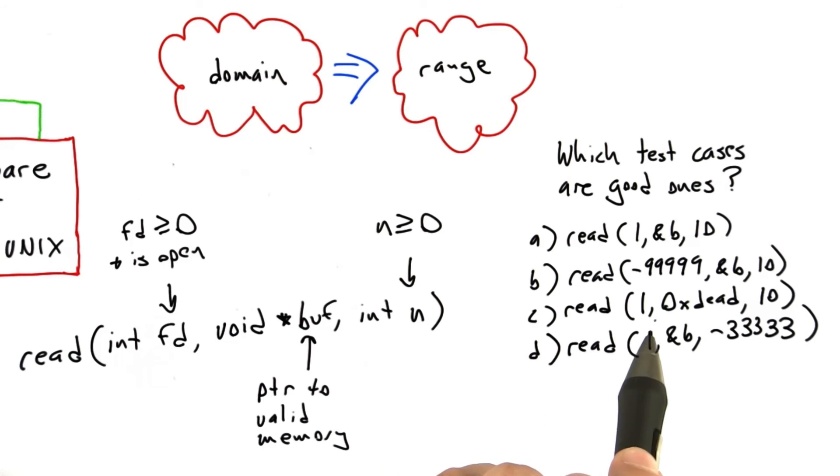The third test case is reading into file descriptor one, using a pointer to an address which is almost certainly a bad one. This is just a random hex constant I just made up. Also, reading 10 bytes into there. And a final test case reads into file descriptor one, into a valid address b, that reads minus 33333 bytes.